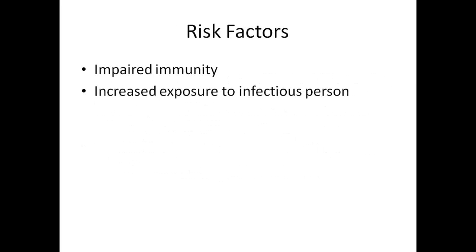The risk factors: Most people who get infected never develop symptoms as their immune system manages to control the bacteria. Active TB occurs when the infection is no longer contained by the immune system, and the typical symptoms of cough, fever, weight loss, night sweats, chest pain, and sometimes coughing up blood surface up, which brings us to the major risk factors for developing active disease: impaired immunity and increased exposure to infectious persons.